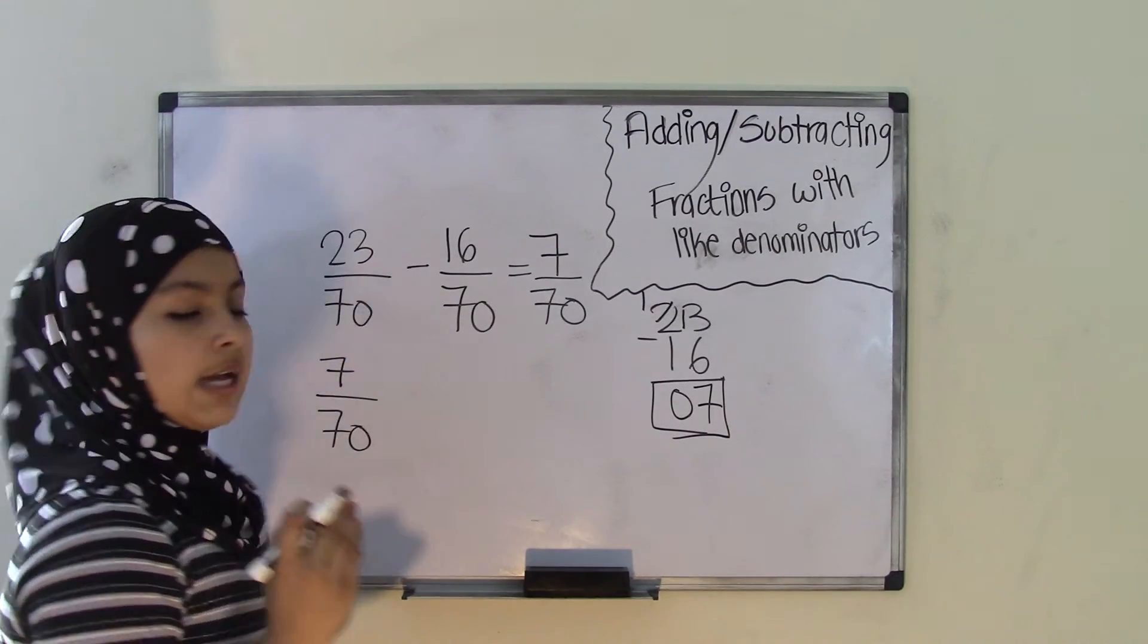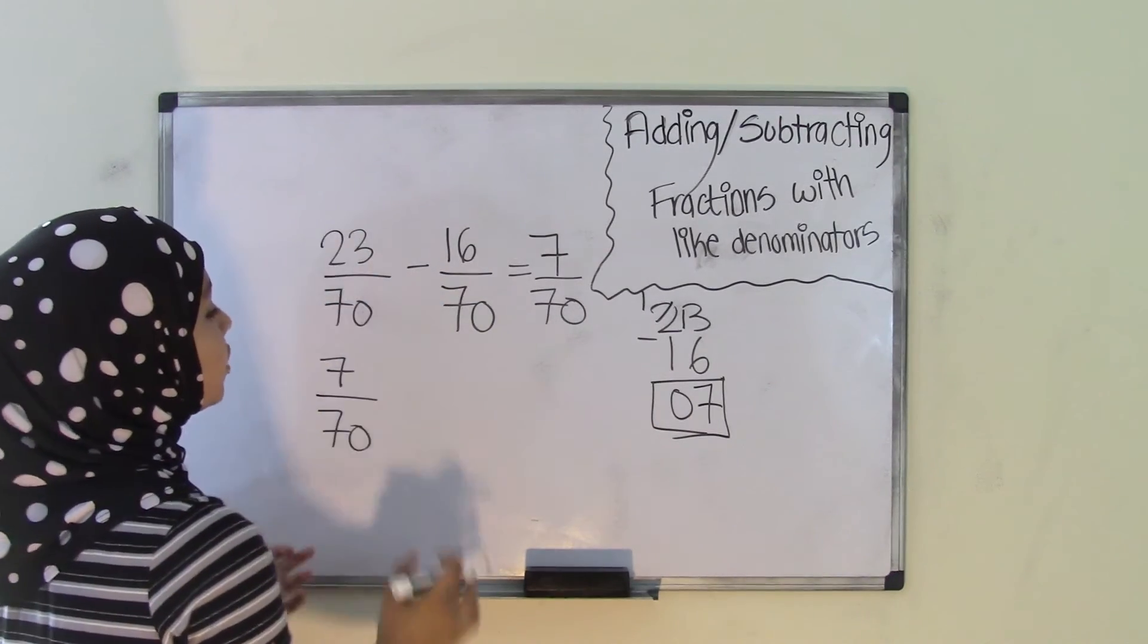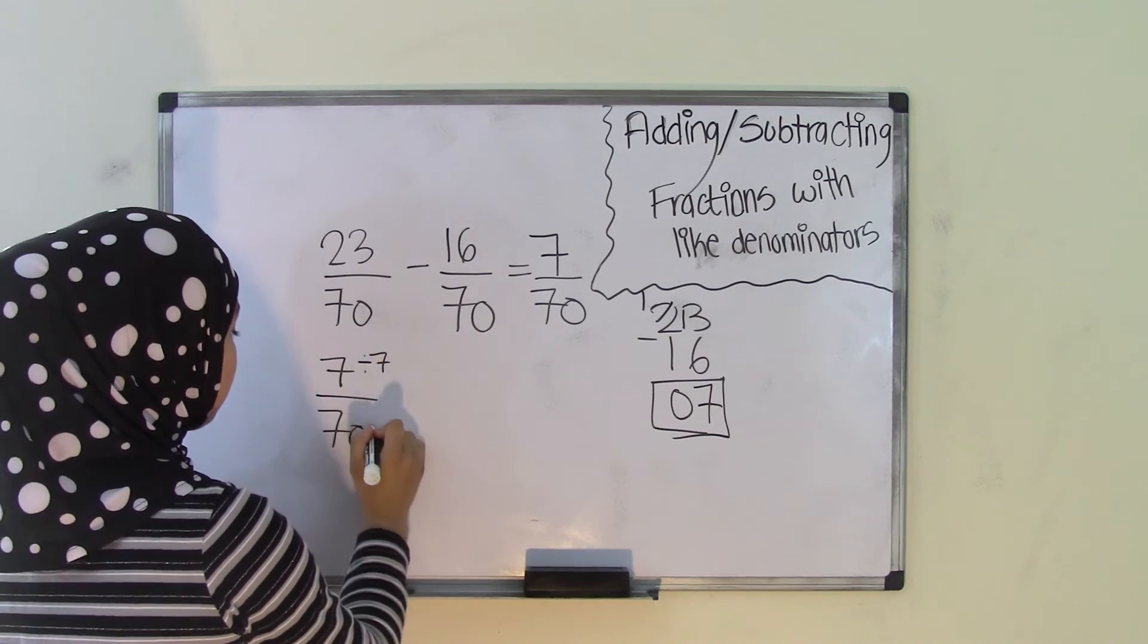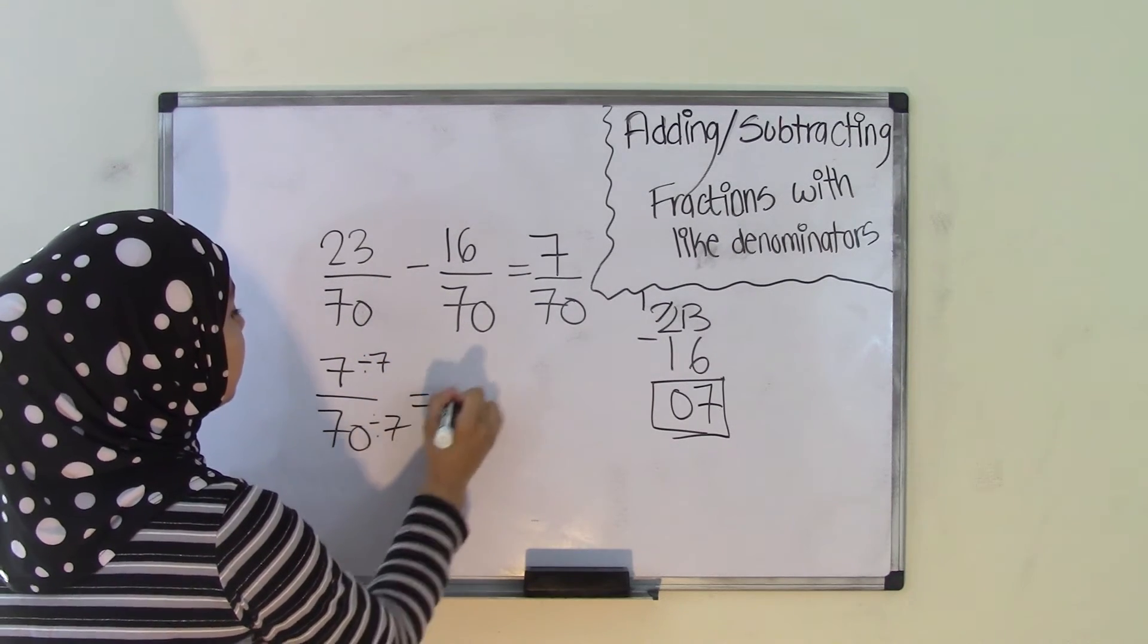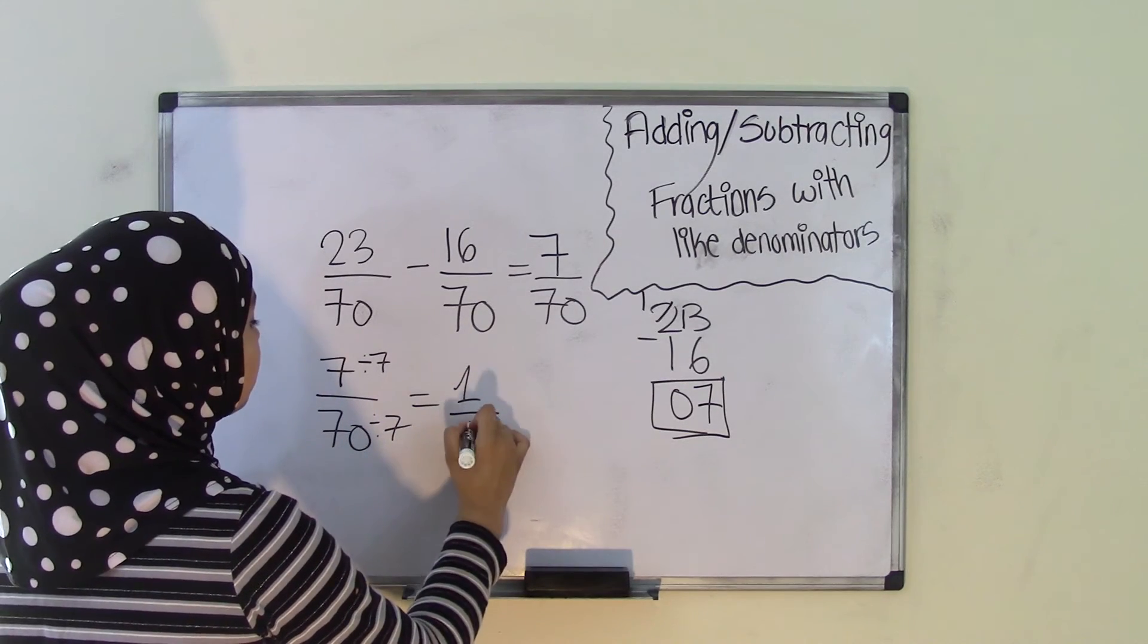So what number is the same number that we can divide 7 and 70 by to get a reduced fraction? Well, how about 7. Because we know that 7 divided by 7 is 1. And 70 divided by 7 is equal to 10.